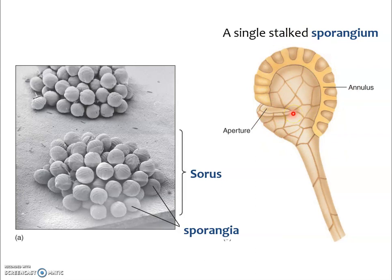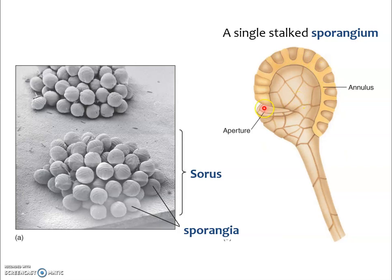In the ferns, we've got a special adaptation to help fling the spores out into the world. There's a weak part called an aperture — a general word for an opening. There's also special tissue called an annulus, which you definitely saw under the microscope. As the sporangium starts to dry out, the annulus tissue around the top contracts, pulling the sporangium open. Then, like a catapult, the tension releases and the whole lid swings forward and flings the spores out into the world.